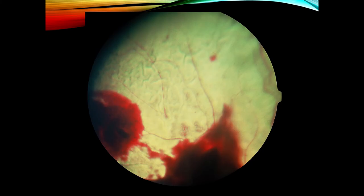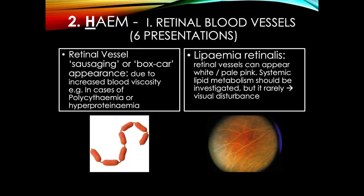Gross hemorrhage — a string of sausages, a boxcar appearance one after the other. This is about the only slide I've ever seen with sausages associated with that vessel. That boxcar appearance is associated with badness — strange diseases, things we're not commonly going to see every day.